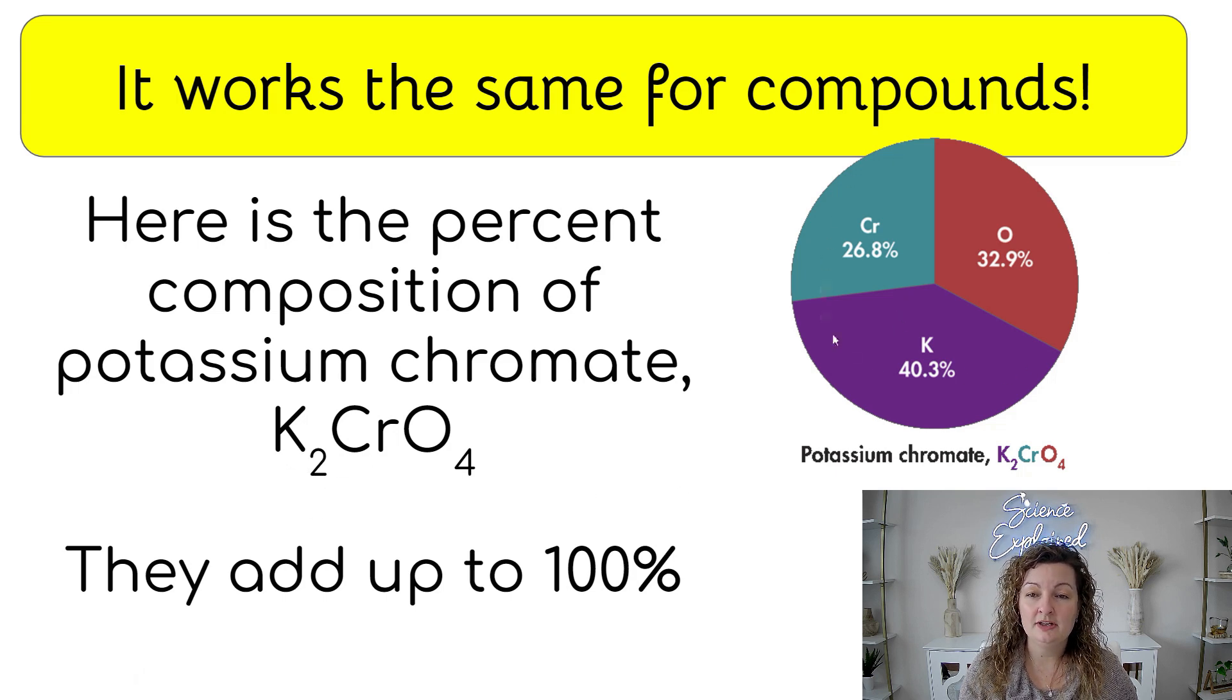And you can see this pie chart here all adds up to 100% for potassium chromate. And you can see the breakdown of each one of the elements. So we have the majority being potassium at 40.3% and then oxygen at 32.9% and chromium over here at 26.8%. And again, they all add up to 100%. But now you know how much each one appears at inside the actual compound.